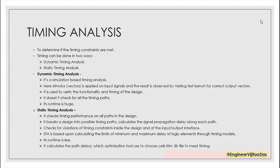This timing analysis is performed in two ways: one is dynamic timing analysis and another is static timing analysis. Previously we used to use dynamic timing analysis, but due to certain disadvantages we moved on to static timing analysis. Dynamic timing analysis is a simulation-based method where we apply some input vectors and check whether we are getting the correct output vectors, and this whole result is observed by a Verilog or VHDL test bench. The main utility is to check whether the functionality and timing of the design are correct.